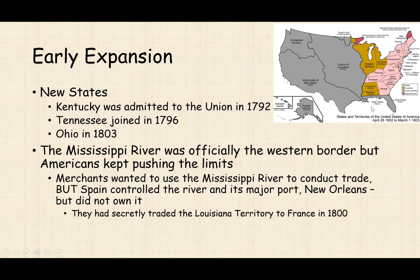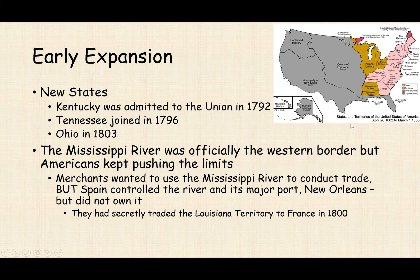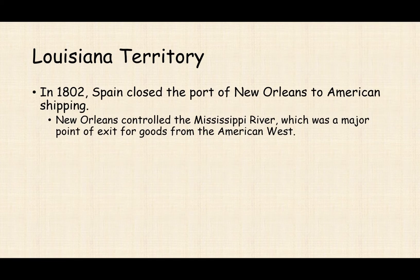The Mississippi River is crucial for trade. Farmers rely on it to get goods out and bring goods in — it's far easier than traveling overland. The problem is New Orleans, a critical chokepoint. Whoever controls New Orleans controls that entrance and exit. At this time, New Orleans is controlled by Spain, even though Spain had secretly traded the entire Louisiana Territory to France in 1800.